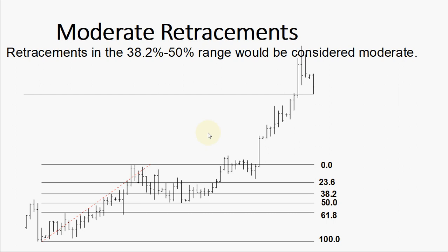Here we have moderate retracement. Retracement in the 38.2% to 50% range will be considered moderate. From this example, we have a price move from here up to the high point, and we had a retracement of 50%. Between 38 and 50%, we call it moderate retracement. So we term this as a moderate retracement, and then the price continues to advance.